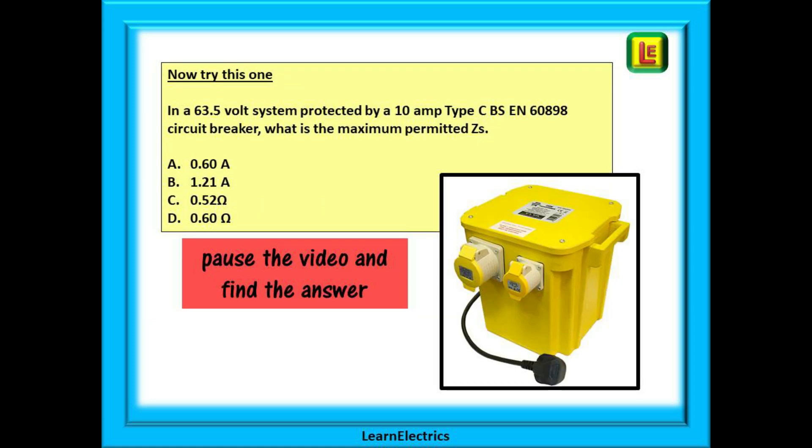Now try this one. If a 63.5 volt system is protected by a 10 amp type C BS EN 60898 circuit breaker, what is the maximum permitted ZS? You need to pick out the key words, the clues to finding the answer. 63.5 volts implies reduced low voltage. ZS implies start at page 65 and flick just 5 pages to find table 41.6 on page 74. We have 4 multiple choice answers as shown. Pause the video and have a go at answering the question.